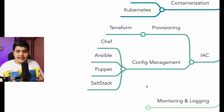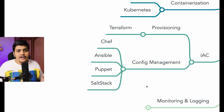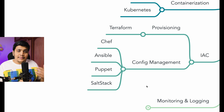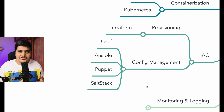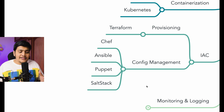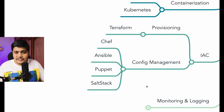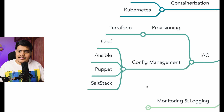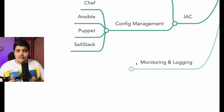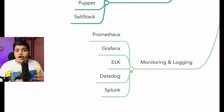The other aspect of Infrastructure as Code is configuration management. Once infrastructure is created, you need to configure it — for example, a Java application requires different configuration than a Python application. You'll also handle maintenance, upgrade, and update activities. For this, there are tools like Chef, Ansible, Puppet, and SaltStack. Ansible is highly in demand and very easy to learn, so it's a great starting point — but as always, learn whatever is used in your organization or is most in demand.